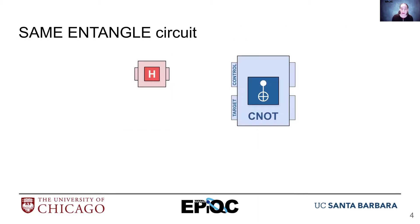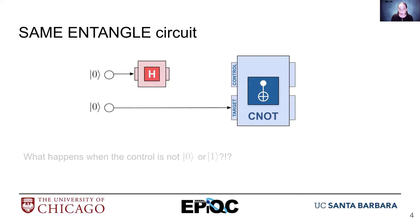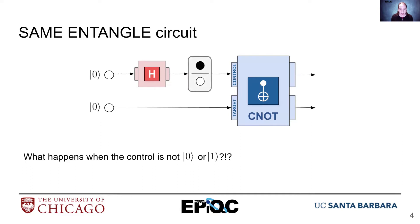The entanglement circuit is very simple. It's merely an H block that puts the control bit in superposition before moving on to the target. We have a white target, and the H gate receives the white and spits out a black or white. So we need to figure out what happens when the control is not simply a zero or a one pure state.